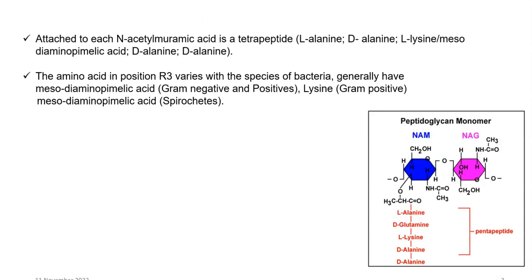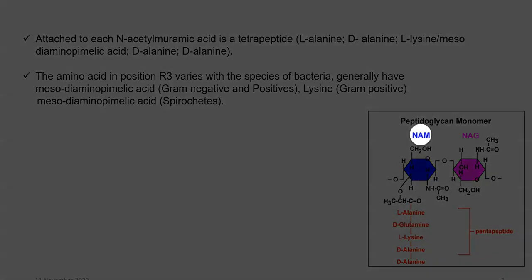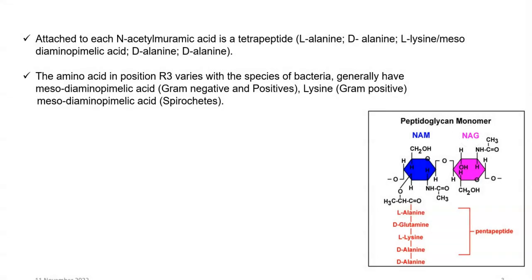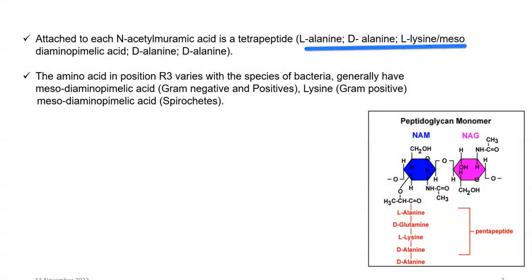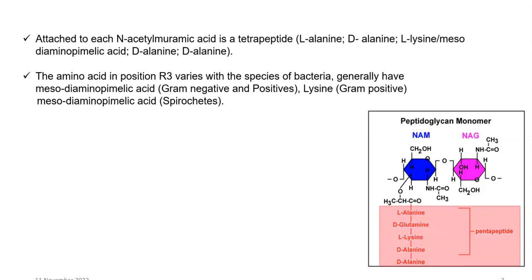Looking at the diagram showing the structure of peptidoglycan, it is made up of N-acetyl muramic acid and N-acetyl glucosamine, both of which are monomeric molecules formed from glucose. However, N-acetyl muramic acid is the one which contains a tetrapeptide made up of L-alanine, D-alanine, and L-lysine or meso-diaminopimelic acid, which can be present in gram-negative as well as gram-positive bacteria. Lysine in the third position is commonly found in gram-positive organisms, and the last two amino acids are two molecules of D-alanine, making five molecules together constituting the pentapeptide attached to N-acetyl muramic acid.